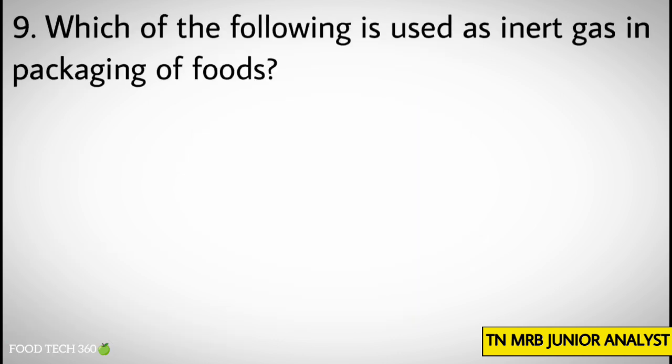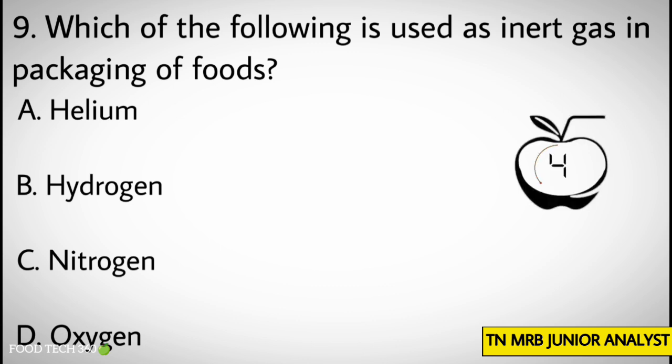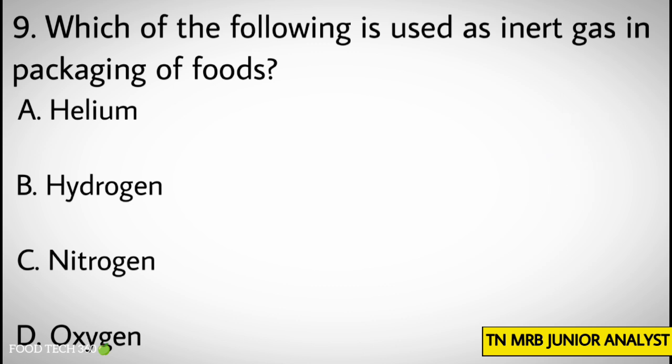Question number 9: Which of the following is used as an inert gas in packaging of foods? Options: A. Helium, B. Hydrogen, C. Nitrogen, D. Oxygen. Correct answer: C. Nitrogen.